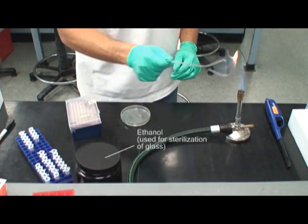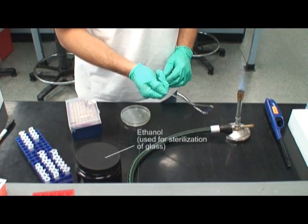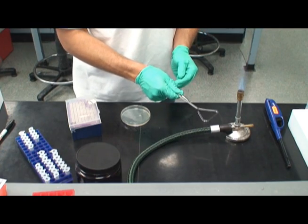A sterilized glass rod is used to spread the plated dilution. If unsure how to safely sterilize or spread bacteria, be sure to review the fire safety video.